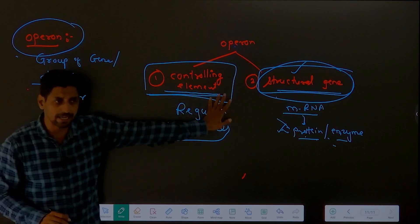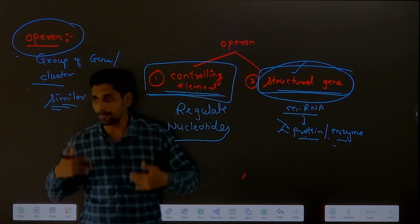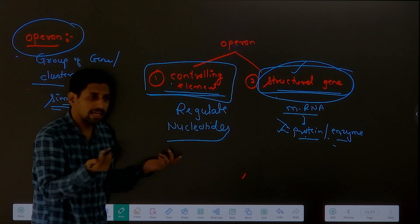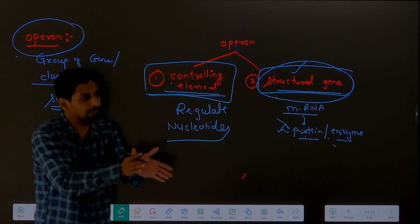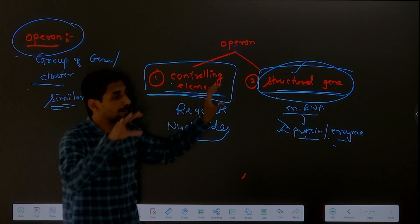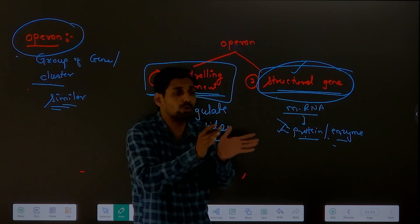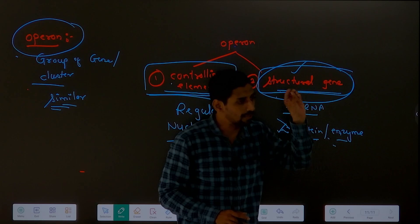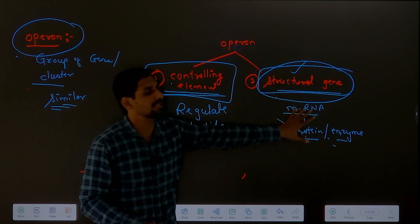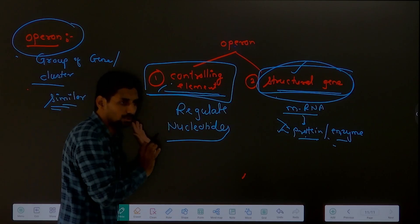Some of you might be thinking - after DNA, did controlling element come and structural gene come? Let me clarify once - controlling element is nothing but the nucleotides. Here also it is nucleotides - adenine, guanine, cytosine, thymine. Inside structural gene also it is ATGC. We have just given different names to different segments - like the body has nose, eyes, various parts. Controlling element is a part of DNA; we have given it a particular name. What controls and regulates - its name is controlling element. What makes the important protein and enzyme - its name is structural gene.